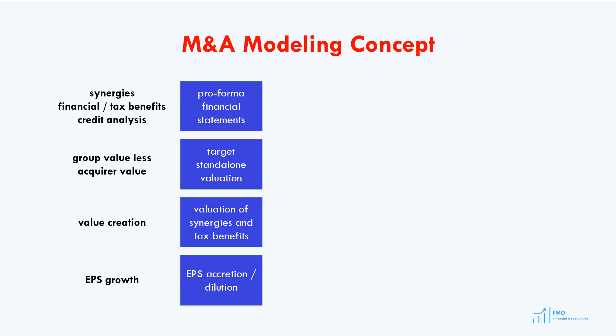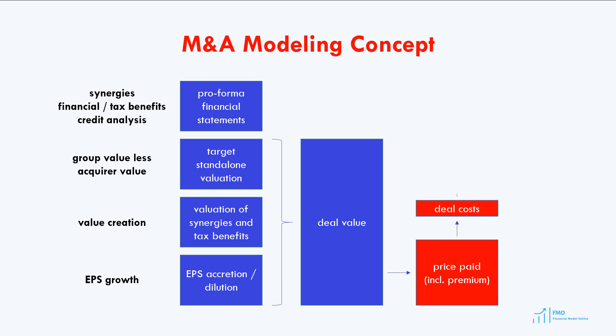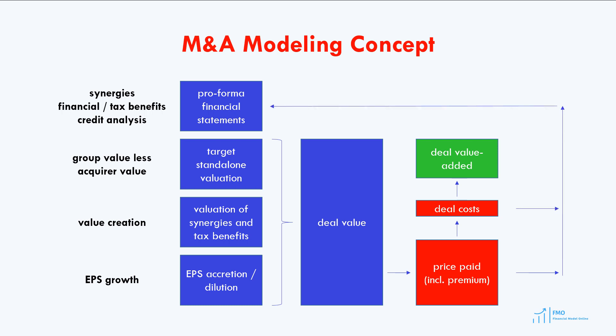We complement the valuation analysis with EPS accretion dilution analysis to see whether earnings per share of the combined entity grows post-acquisition. Together, these give us the deal value. We then deduct the price paid and transaction costs to see if there is a positive deal value added — whether we are creating or destroying value. The whole process is iterative because transaction costs and the price paid to target shareholders impact the pro forma financial statements. Once all moving parts are in place, we can run a sensitivity analysis to see what premium makes sense to pay to the target shareholders.